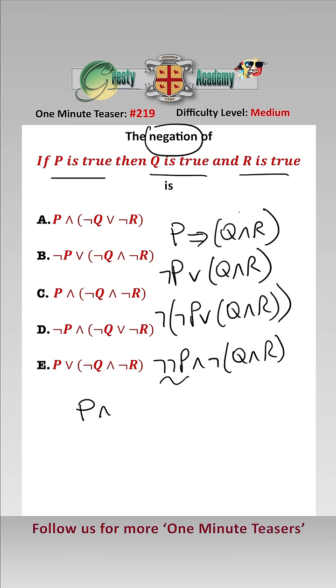Well, not not P is just P and, and again, using De Morgan, we have not Q or not R, which is answer A.